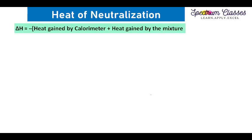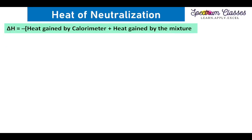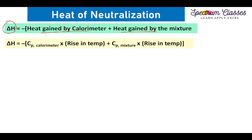The heat of neutralization equals the heat gained by the calorimeter plus the heat gained by the mixture. The reaction is performed in the disposal glass and that glass also absorbs some energy. On reaction of HCl with NaOH, the temperature of the solution rises, which is why we call it heat gained by the mixture.